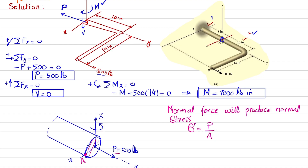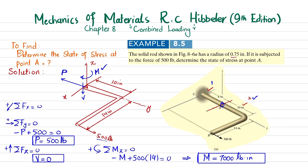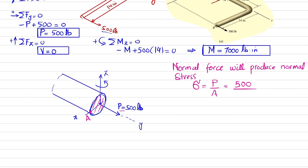Due to the normal force P, we calculate the normal stress: sigma equals P divided by cross-sectional area. P is 500 pounds and the radius is 0.75 inch, so the area is pi times r squared equals pi times 0.75 squared. Solving gives a normal stress of 283 psi, or 0.283 ksi (kilo pound per square inch).